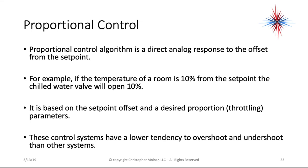Proportional control is an algorithm that is a direct analog response to the offset from the set point. For example, if the temperature of a room is 10 degrees from the set point, the chilled water valve will open 10%. It's based on the set point offset and the desired proportion, also called throttling parameters. These control systems have a lower tendency to overshoot and undershoot than other systems because of the direct proportional response.